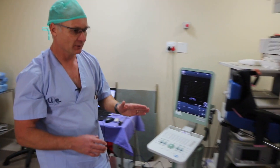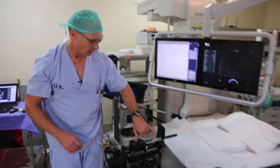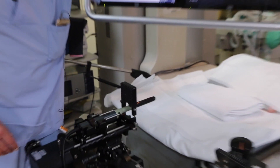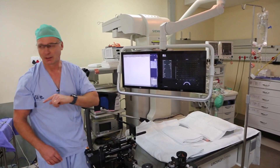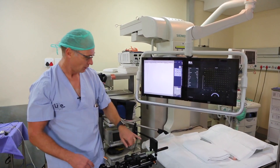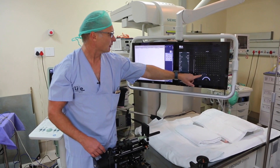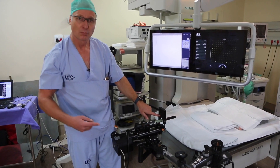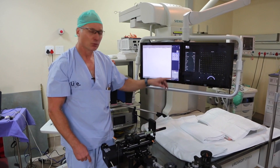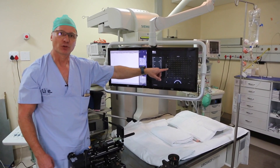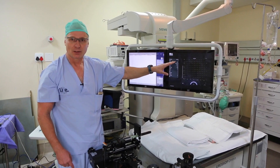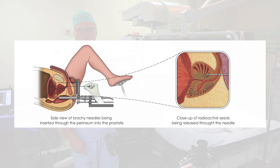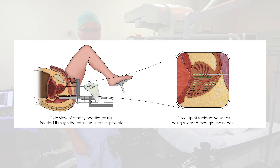So now we go back to the patient. You can see above the ultrasound is a grid. That grid correlates with the grid on the ultrasound and obviously the grid on the planning computer. If we know that we need a needle in C2, we can go through here at C2 and put the needle in. On the ultrasound we can see that it ends up in the right position — you can maneuver it a little bit to get it exactly in the right place. Then we put all the needles in. Typically 14 to 16 needles are used per session.